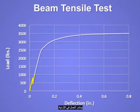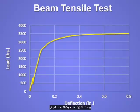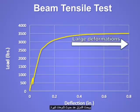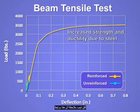The load continues to increase until the steel begins to yield, after which the curve begins to flatten. Because steel is very ductile and strain hardens, failure occurs at large deformations. A comparison of the two curves shows the dramatic difference in performance. The difference in strength is very large, but it should be noted that this is related to the area of steel used.